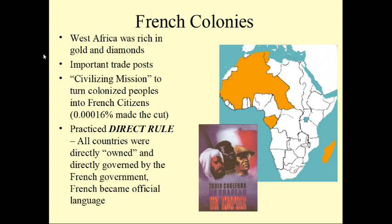The French colonies, mainly in West Africa, were rich in gold and diamonds. They had important trade posts and missions to, quote, turn colonized peoples into French citizens — though only a few thousand out of many millions actually did. They practiced direct rule, so these countries were essentially owned and directly governed by the French government, which set up colonial administrations making them part of France. Of course, they were not treated as equal citizens. France took possession from Mauritania to Chad — French West Africa — also Gabon and the Republic of Congo, which was French Equatorial Africa. French became the official language of government and commerce, though people still spoke their local languages.